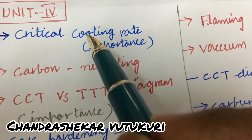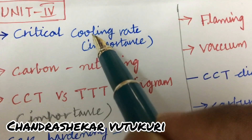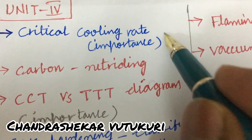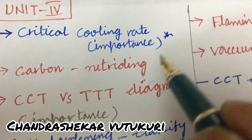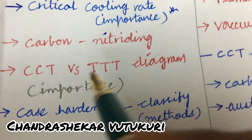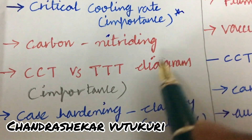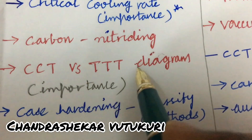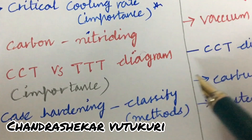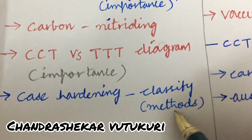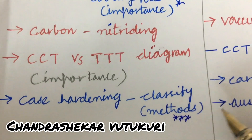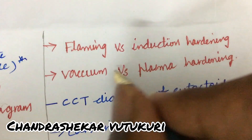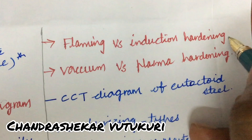In Unit 4, you will sometimes get one and a half questions. The critical cooling rate and its importance, carbon nitriding with its diagram, the importance of CCT versus TTT diagram, and case hardening — its classification and methods — are said to be very important. Flame hardening versus induction hardening, or vacuum versus plasma hardening, are also key topics.